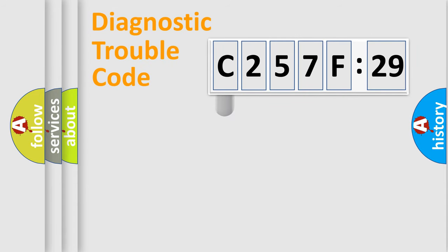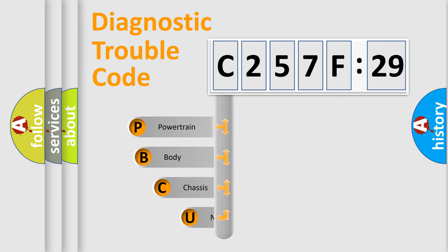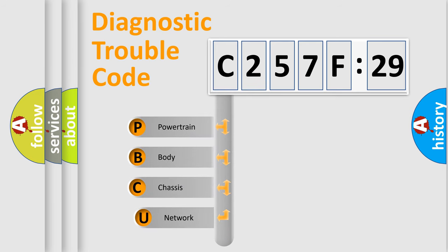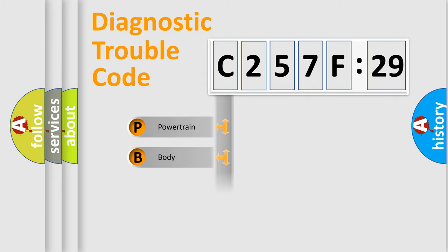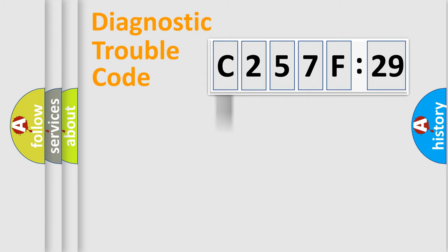First, let's look at the history of diagnostic fault code composition according to the OBD2 protocol, which is unified for all automakers since 2000. We divide the electric system of the automobile into four basic units: Powertrain, Body, Chassis, and Network.